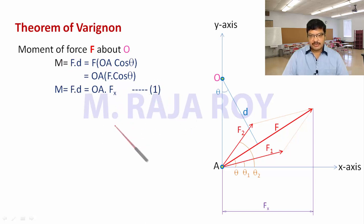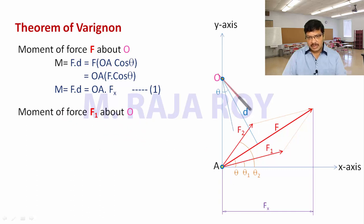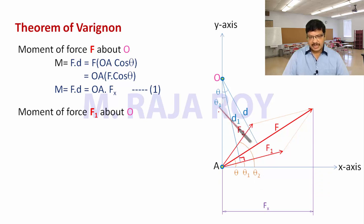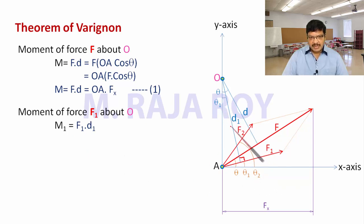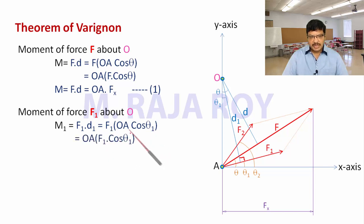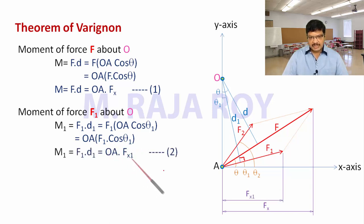Now we will find the moment of force F1 about O. Draw a perpendicular from O onto the F1 line — this is 90 degrees — and automatically this angle will become theta 1. Moment M1 equals F1 into D1. D1 equals OA cos theta 1, so M1 equals OA into F1 cos theta 1. F1 cos theta 1 can be written as Fx1, the x-component of F1. This is equation 2.